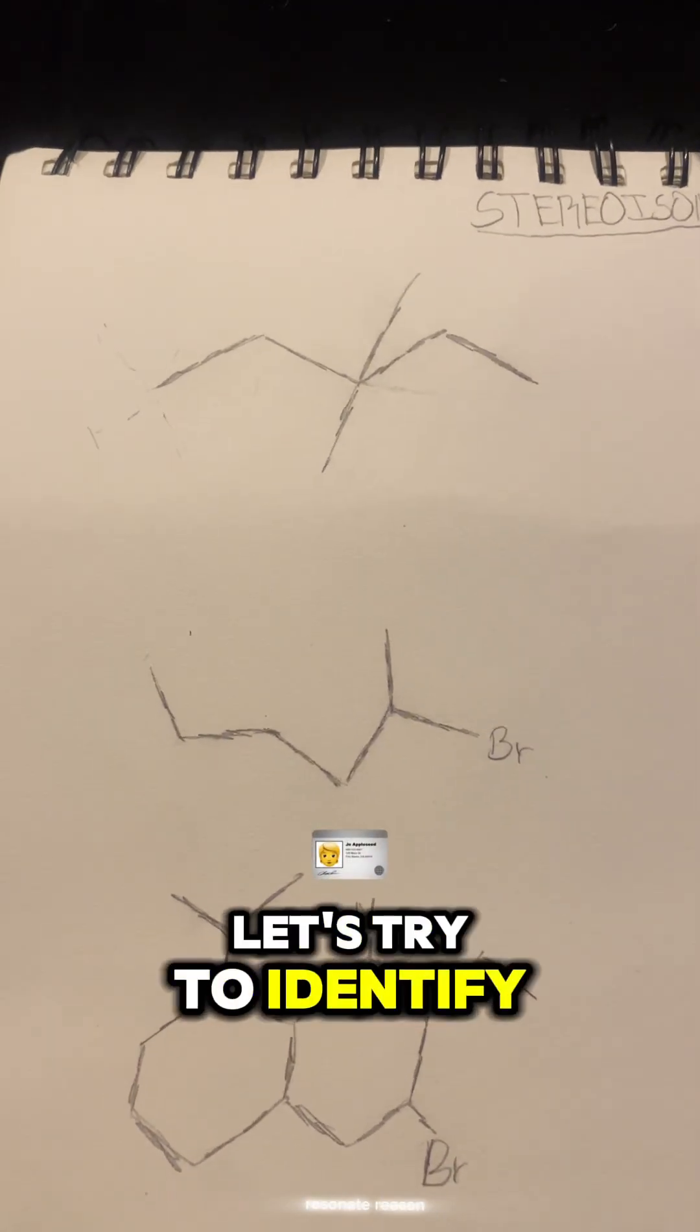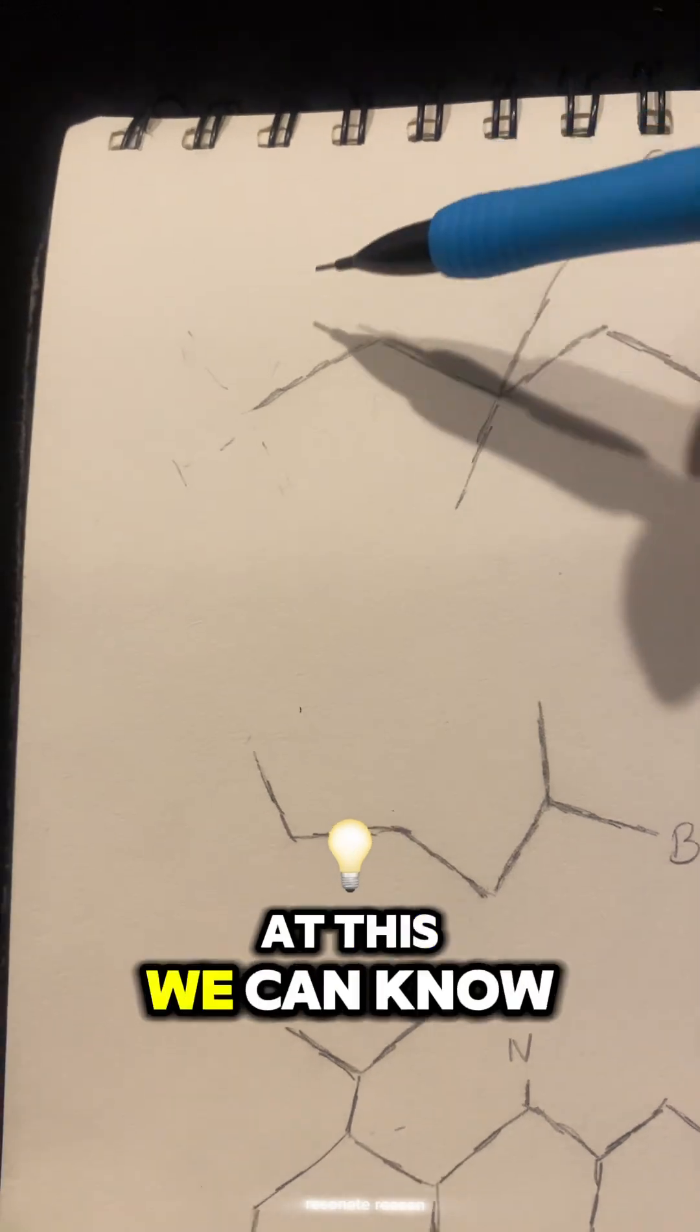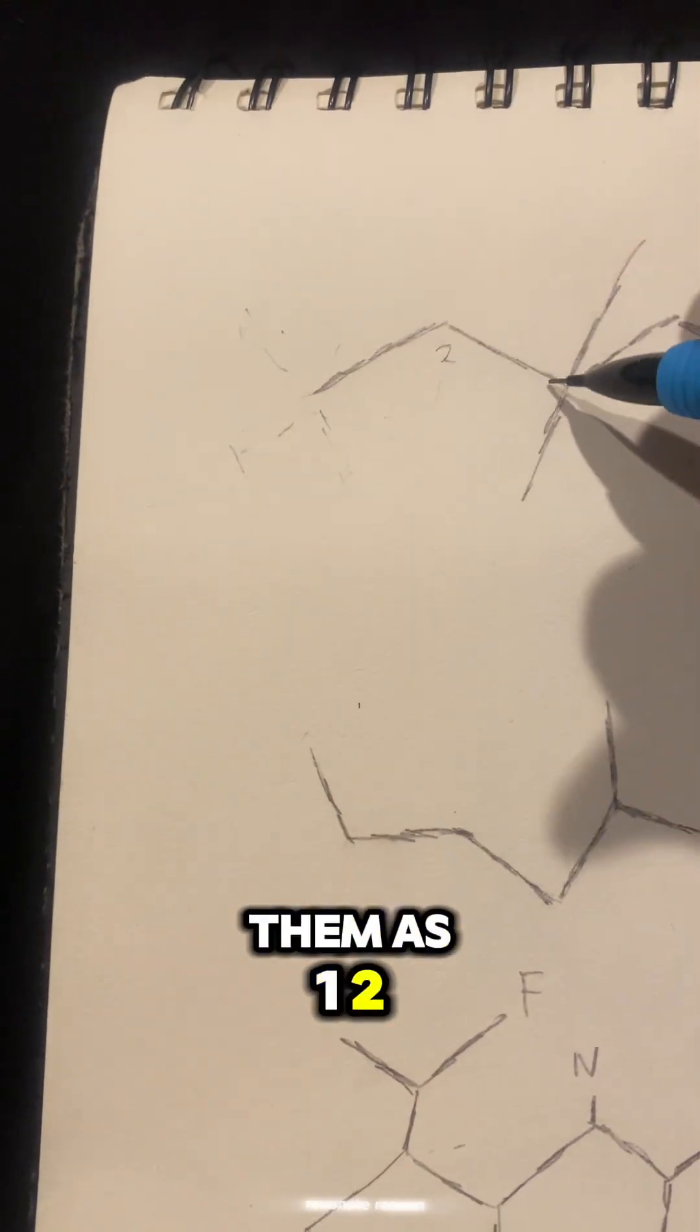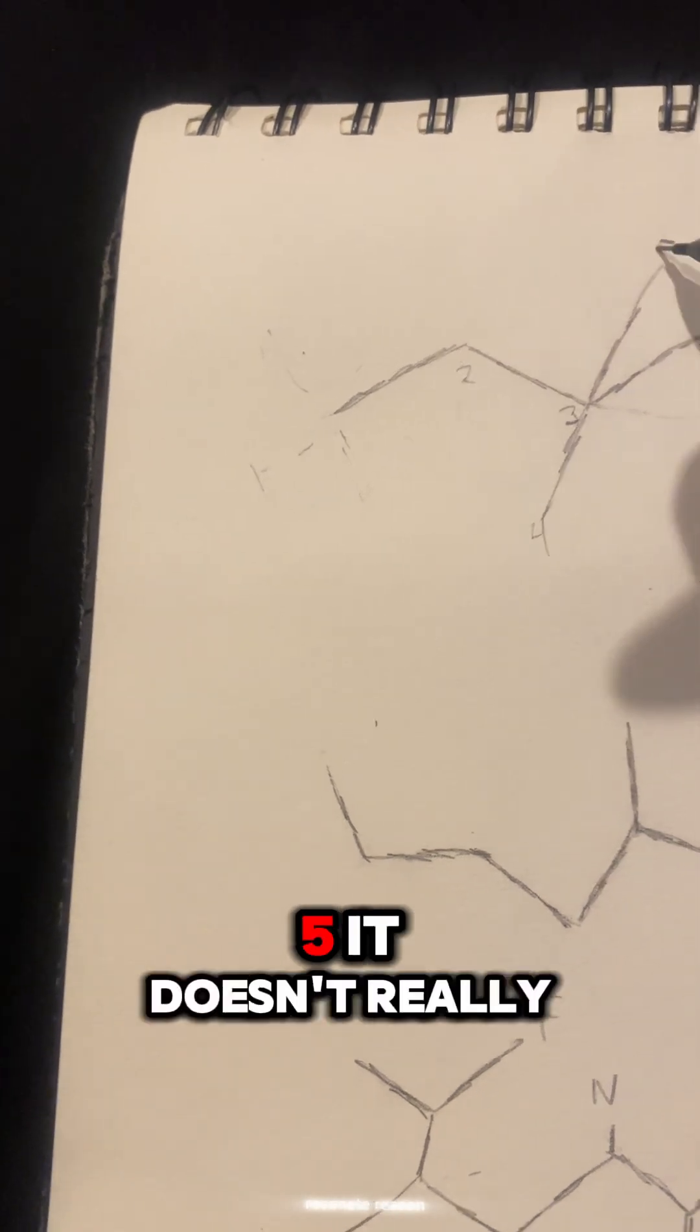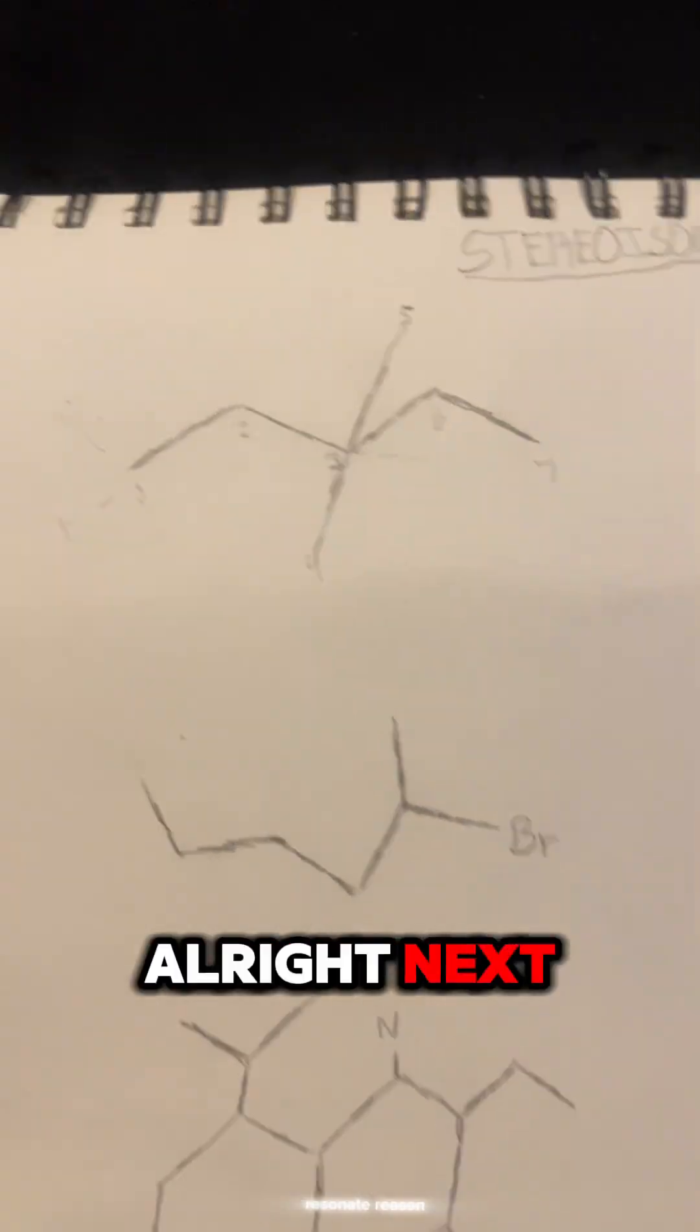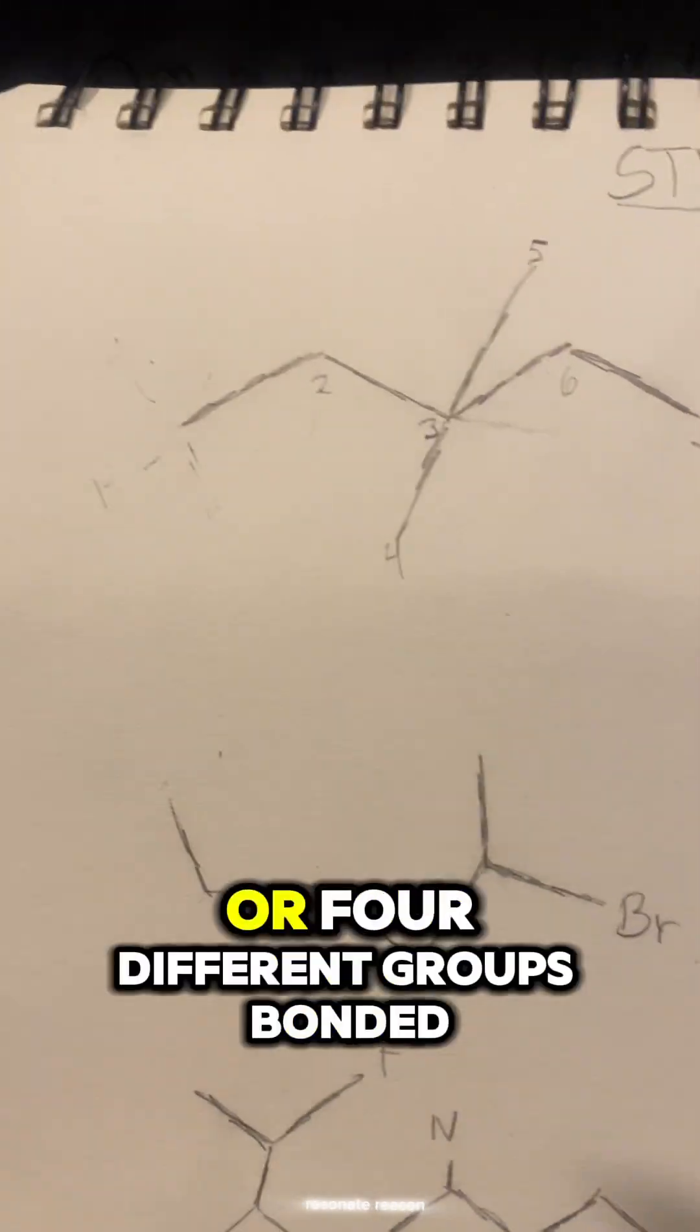So first, let's try to identify some chiral centers in some of these molecules. If you look at this, we know that there are carbons on the end of each of these lines. So we can list them as carbon 1, 2, 3, 4, 5, 6, 7. Alright, next, we're going to need to find out if any of these carbons have four different atoms bonded to it, or four different groups bonded to it.